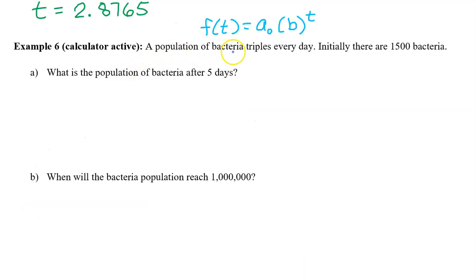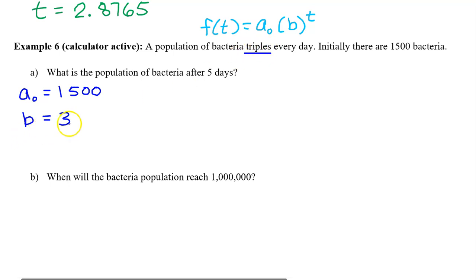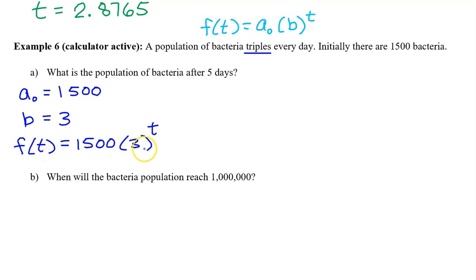Example 6: A population of bacteria triples every day. Initially, there are 1,500 bacteria. Exponential growth like this can be modeled by f of t equals a-zero times b to the t power. A-zero is the initial amount, which is 1,500 bacteria. The b value is the growth factor, which they gave us directly — the population triples every day, so the growth factor is 3. If the population doubled every day, b would equal 2. Putting it all together, the population after t days can be modeled by f of t equals 1,500 times 3 to the t power.